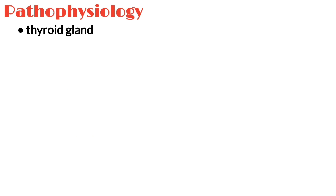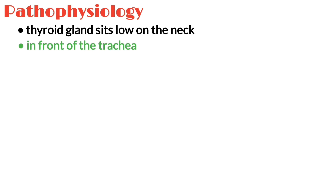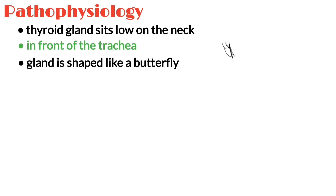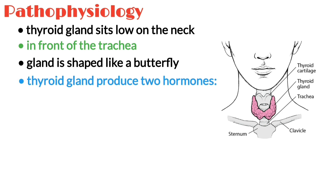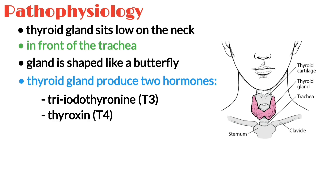The thyroid gland sits low on the neck, below the Adam's apple and in front of the trachea, which is the windpipe. The gland is shaped like a butterfly with two symmetrical lobes. The thyroid gland produces two thyroid hormones: triiodothyronine, which is known as T3, and thyroxine, which is known as T4.